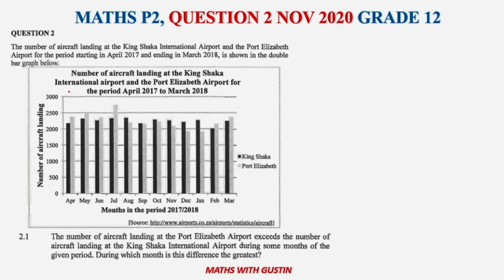The question says: the number of aircrafts landing at King Shaka International Airport and the Port Elizabeth Airport, for a period starting in April 2017 and ending in March 2018, is shown in the double bar graph below. The dark bar represents King Shaka — there is a legend here — and the lighter one represents Port Elizabeth, since this is in black and white.